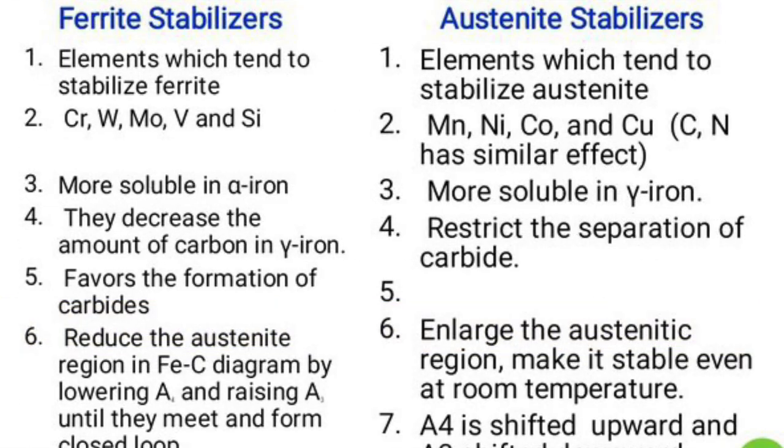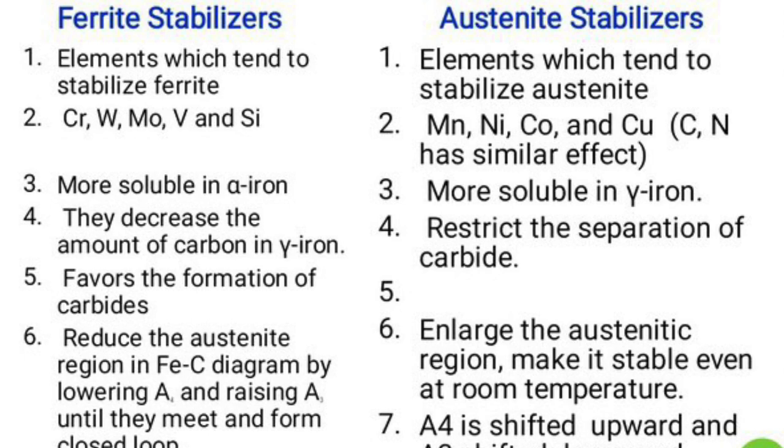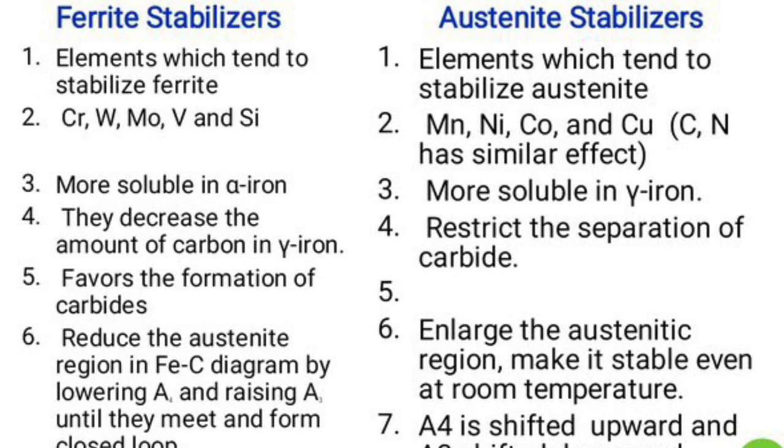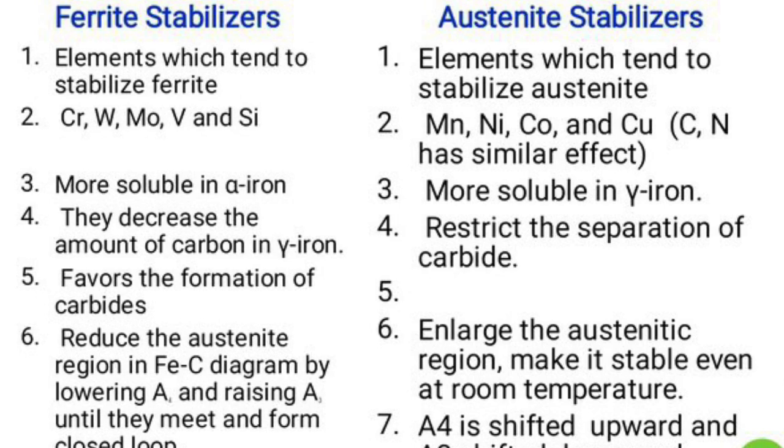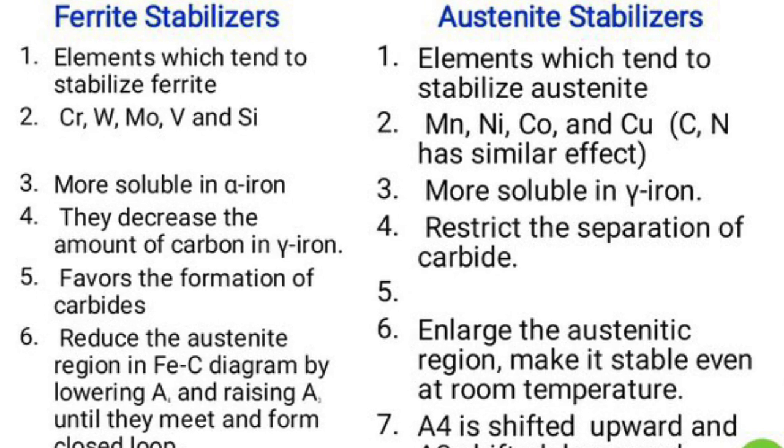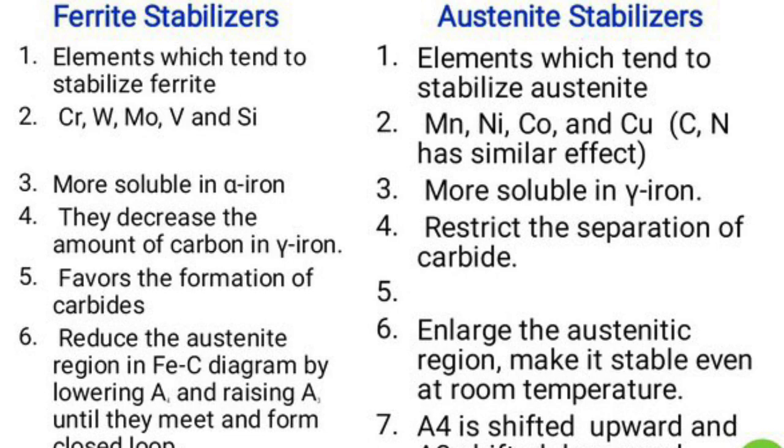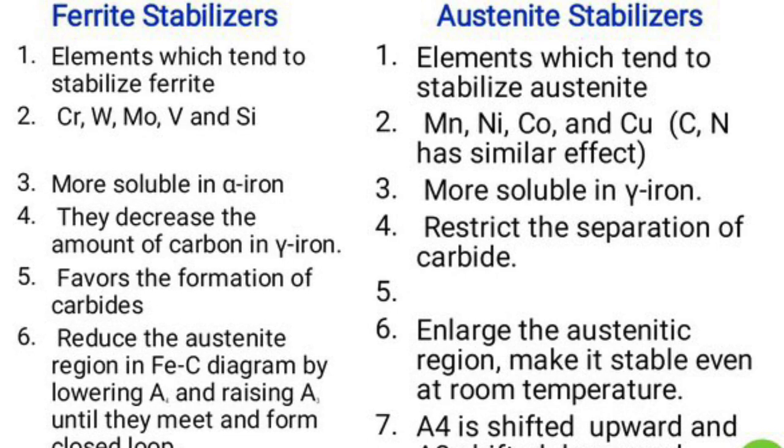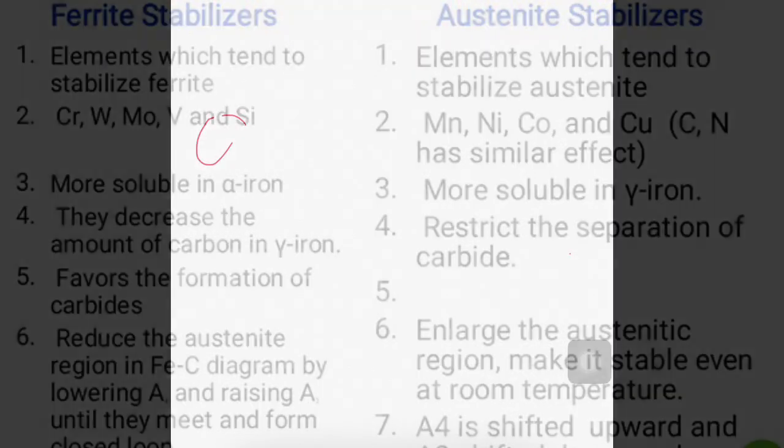To find the ferrite levels, there are two elements required. One is nickel equivalent and another one is chromium equivalent. This nickel equivalent is calculated from austenitic stabilizing elements and chromium equivalent is calculated from ferrite stabilizing elements. To calculate the chromium equivalent value in Schaeffler Diagram, the following elements are required: chromium, molybdenum, silicon, and niobium. These are all for calculating the chromium equivalent value.